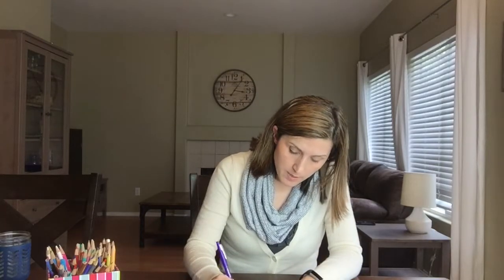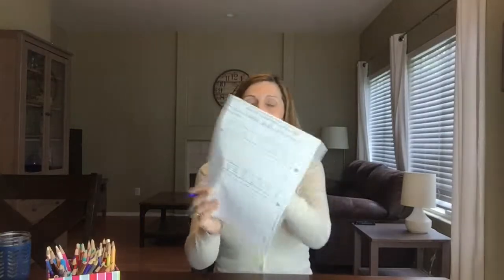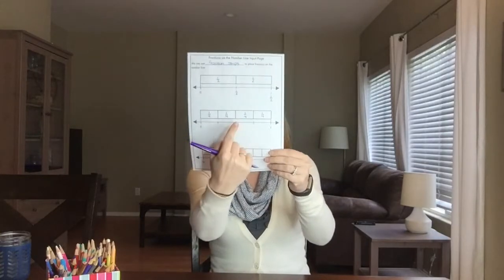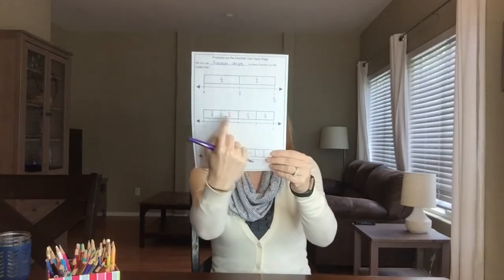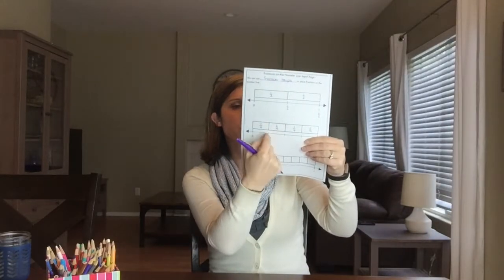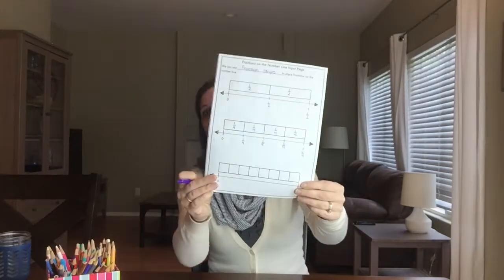I'll make my lines where the pieces of the fraction strips meet — right there, right there. You can just extend the line down. Now I'm ready to label. From here to here it's just one fourth, so I label that one fourth. If I go to the next piece, now I have two fourths behind me. The next piece, I have three fourths behind me. And the last piece, I have four fourths behind me.